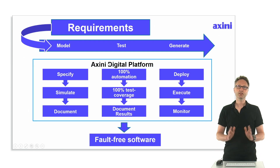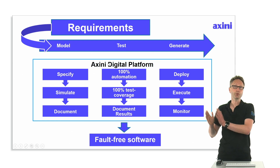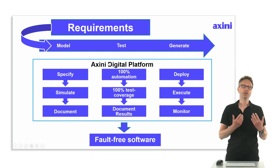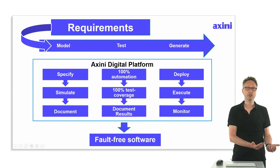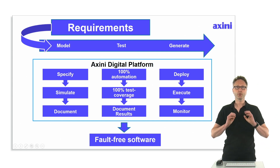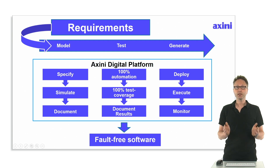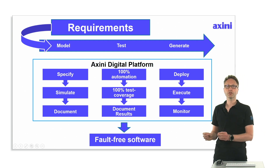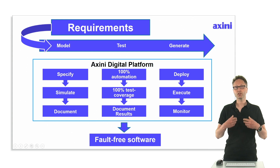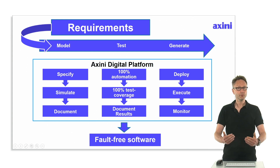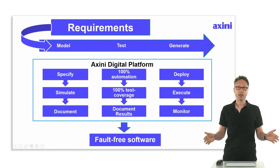Here you see the Axini platform. You start with requirements as input. There are three columns: first, the modeling part — the design and specification — where you can simulate and check your model and generate documentation from it. Second, the test automation part, where we provide 100% automation with a given coverage criterion. Be careful: if the coverage criterion is very thorough, you will need a lot of test cases, but since it's fully automated we can in principle generate them all — though billions of tests will of course take a while. After test execution, the results are documented.